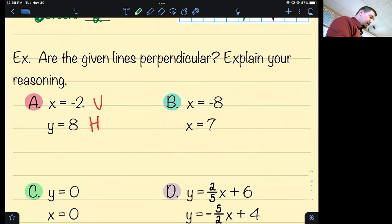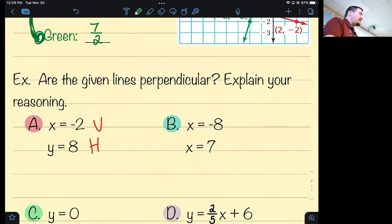They can't be both perpendicular and parallel because perpendicular means they intersect and parallel means they don't intersect. Well, perpendicular means they intersect at right angles. But you get the point.